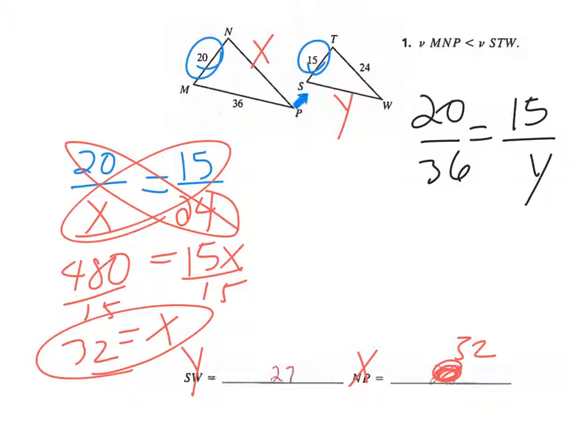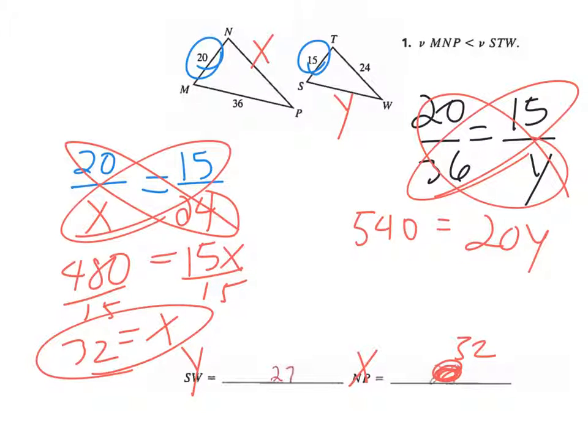The other one, so we already filled it out. So again just as a reminder we said the 20 is like the 15, so the 20 is like the 15, and the 36 is like the Y. Big small big small. So cross product fun here, 36 times 15 is 540, 20 times Y is 20Y. Divide off that 20 and Y is 27. Okay that's the first one.